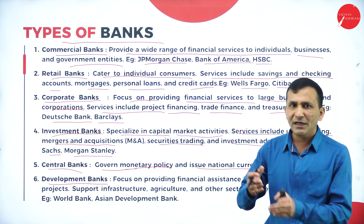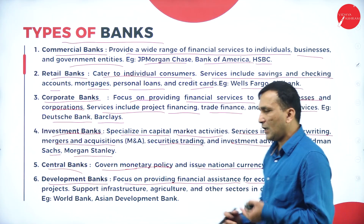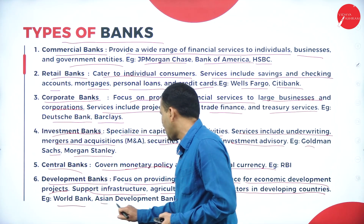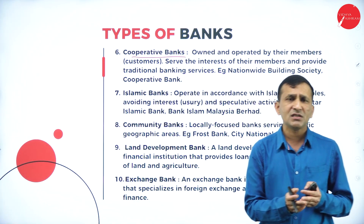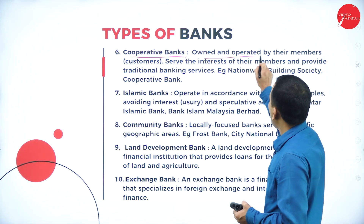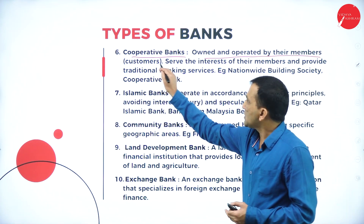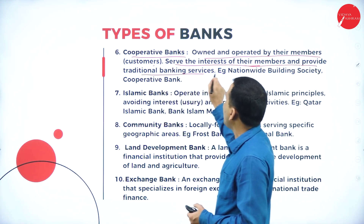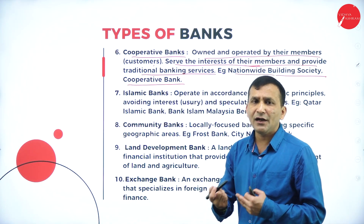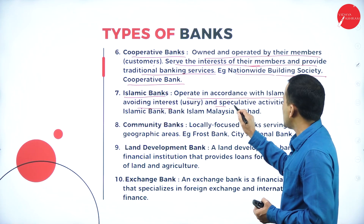Sixth is the development bank, focused on infrastructure development, agriculture development, industrial development, and small-scale industry development. It provides financial assistance for economic development across infrastructure, agriculture, and other sectors in developing countries. Examples include the World Bank and the Asian Development Bank. Seventh is the cooperative bank, related to agriculture, fertilizer, or other cooperative activity — owned and operated by voluntary members who raise funds together and provide traditional banking services to their members. Examples include housing cooperative banks and agricultural cooperative banks. Eighth is the Islamic bank, which operates in accordance with Islamic principles, avoiding interest and speculative activity. Examples include Qatar Islamic Bank and Bank Islam Malaysia.